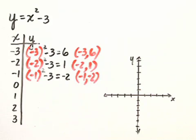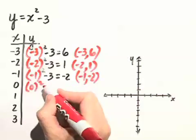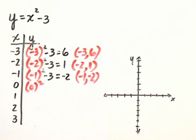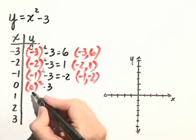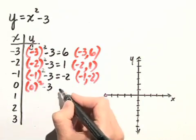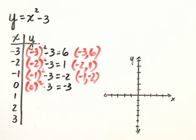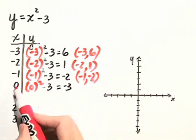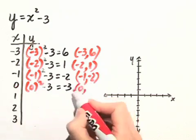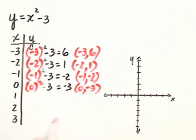Next, we substitute 0 in for x. So we have 0 squared minus 3. 0 squared is still 0, minus 3 gives us negative 3. So this point will be represented by an x-coordinate of 0 and a y-coordinate of negative 3.